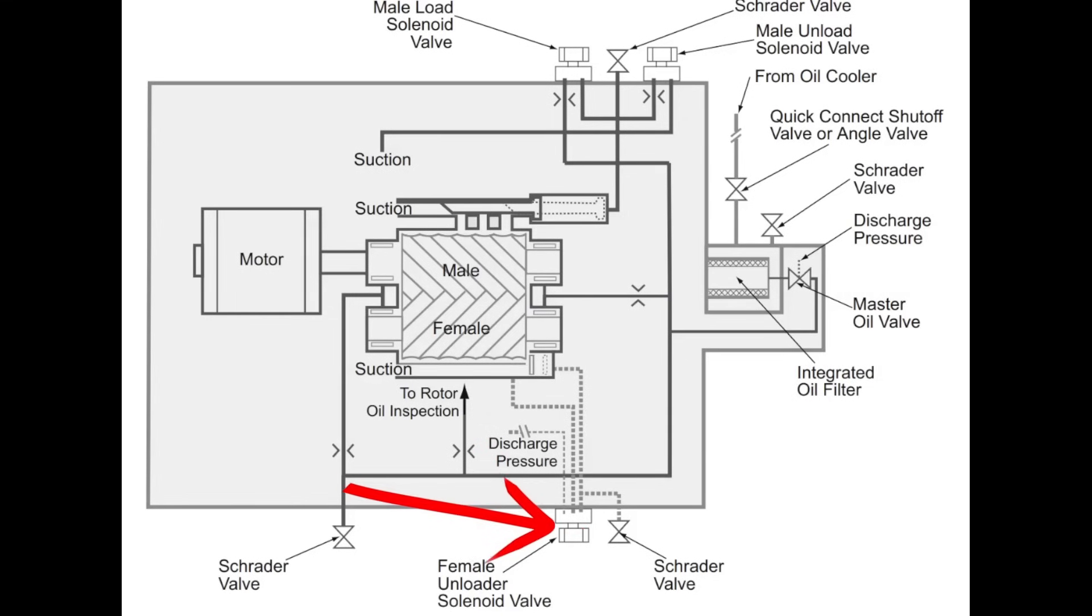When it engages, that is closing this bypass to where now we have full flow through the compressor. We're no longer going back into the suction from discharge. And having a hot gas bypass is basically what's happening here. We do this at startup to minimize the load on the compressor and allow our EXV to open and start feeding the evaporator in a timely manner.